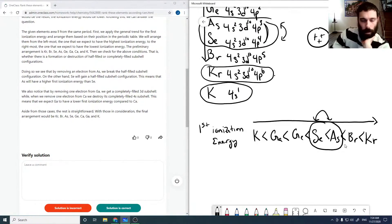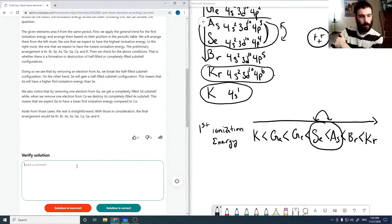But yeah, so it just basically goes left to right across the periodic table with some swaps in places where you get half-filled shells. So the solution is correct. Alright.